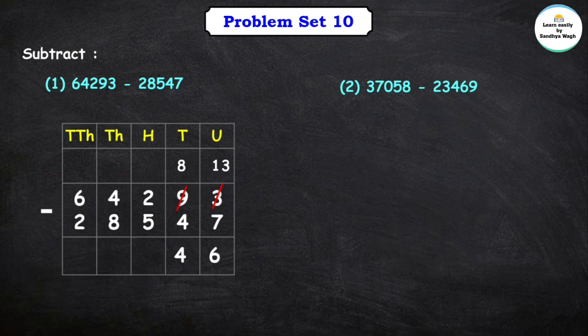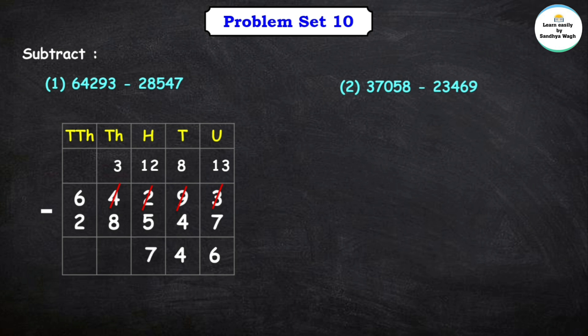Here in the hundreds place, let's subtract 5 from 2. Can we subtract 5 from 2? No, because 2 is smaller than 5. So let's borrow 1 from the thousands place. The thousands place had 4, so after borrowing it becomes 3, and the hundreds place becomes 12. After subtracting 5 from 12, we get 7.